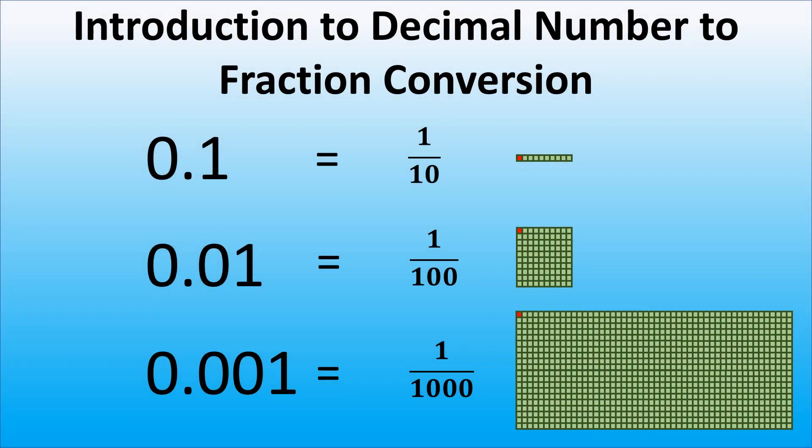Did you know that we can rewrite the fractional part of a decimal number as a fraction? Thus, one-tenth can be rewritten as a fraction of one over ten, and one-hundredths can be rewritten as a fraction of one over one hundred.